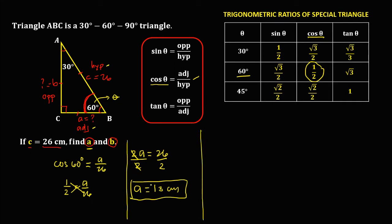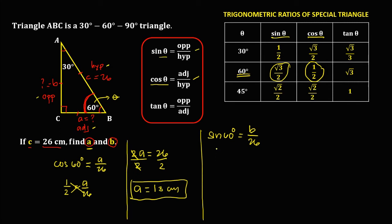For side B, since B is the opposite and the given side is the hypotenuse, opposite over hypotenuse is sine theta, and theta is 60 degrees. So sine 60 degrees equals B over 26. In the trigonometric ratios of special triangles, sine 60 equals square root of 3 over 2, so square root of 3 over 2 equals B over 26.